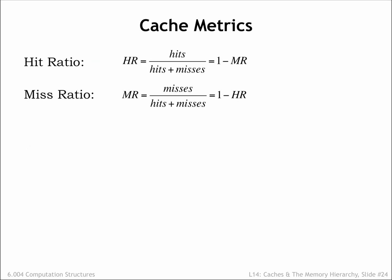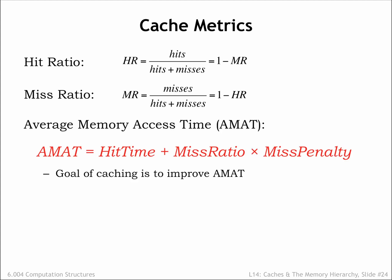The hit and miss ratios tell us the fraction of accesses which are cache hits and the fraction of accesses which are cache misses. Of course, the ratios will sum to 1. Using these metrics, we can compute the average memory access time. Since we always check in the cache first, every access includes the cache access time, called the hit time. If we miss in the cache, we have to take the additional time needed to access main memory, called the miss penalty. But the main memory access only happens on some fraction of the accesses. The miss ratio tells us how often that occurs. So the average memory access time can be computed using the formula shown here.